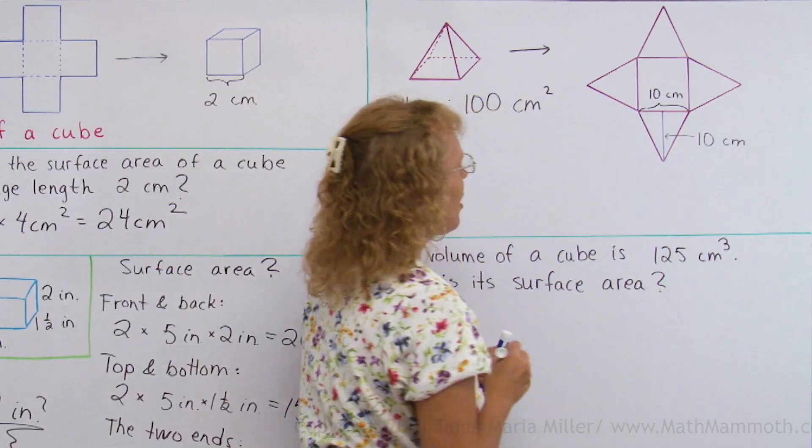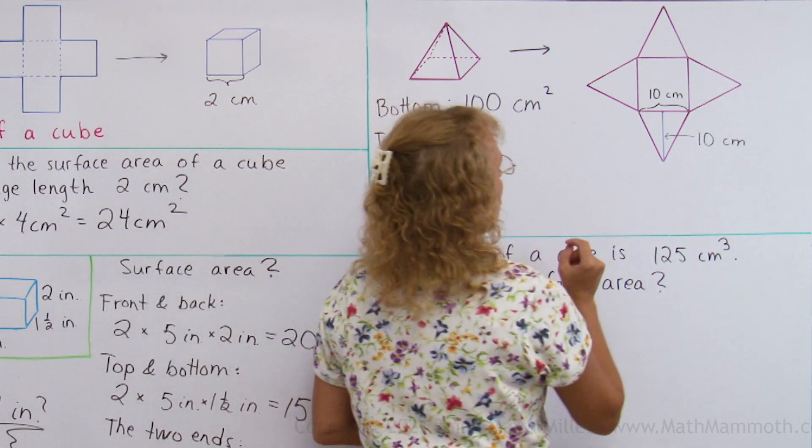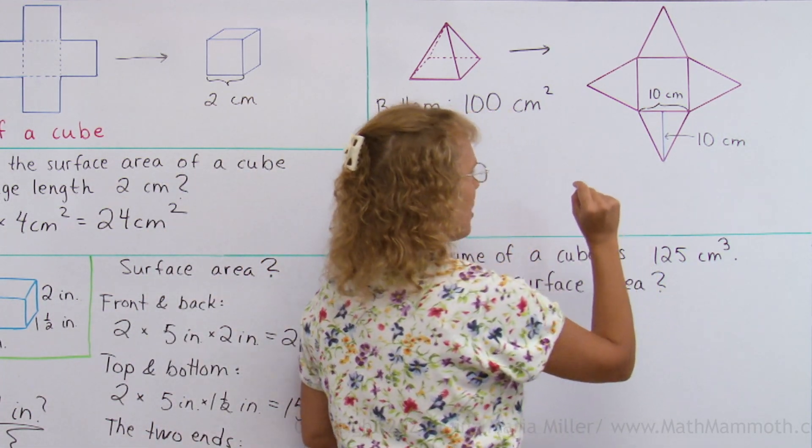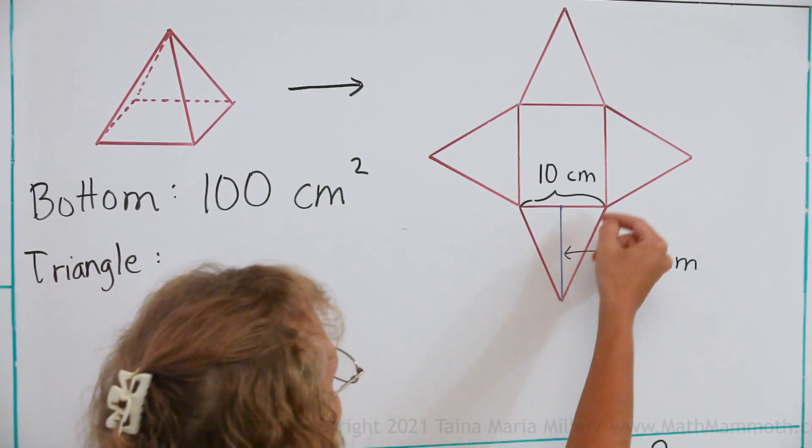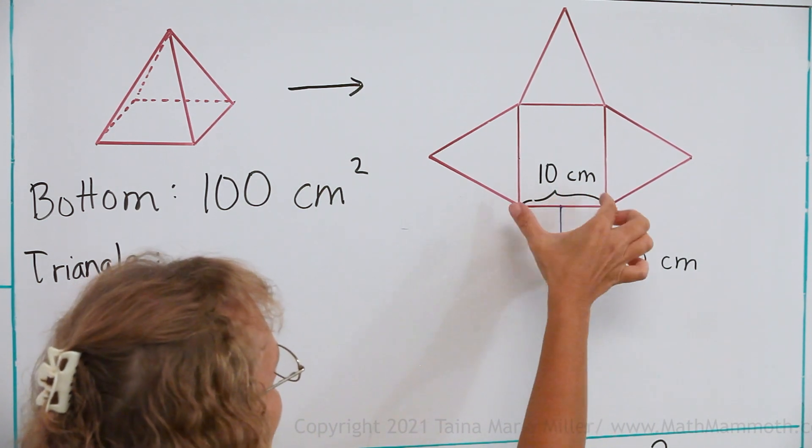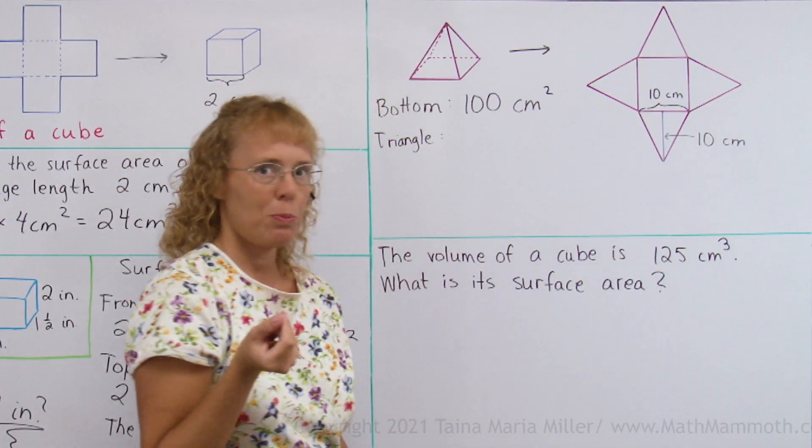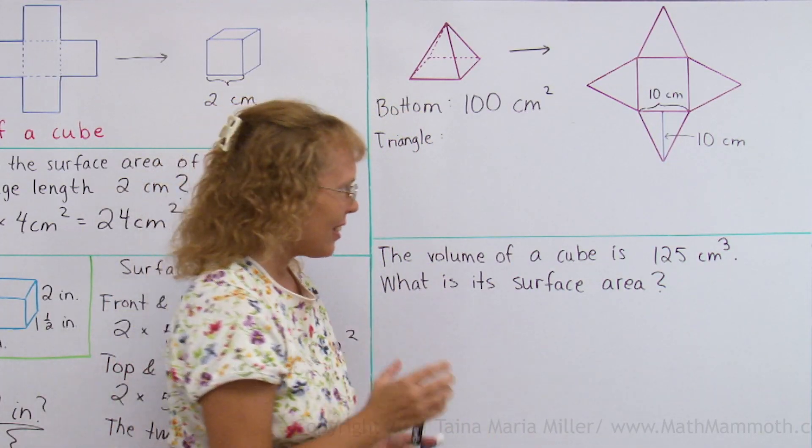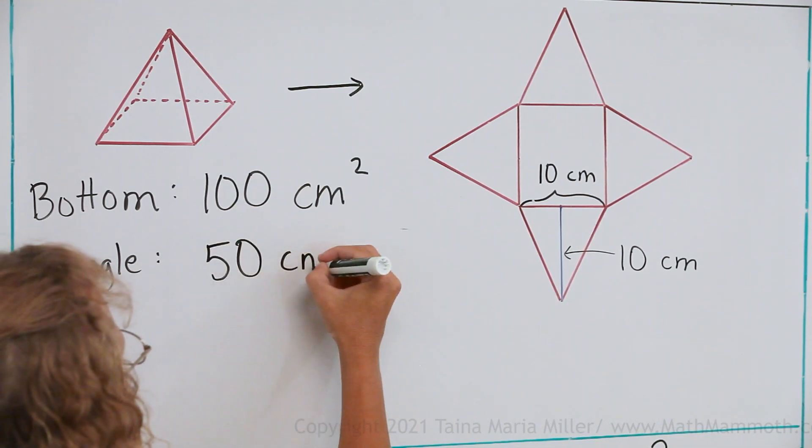One of the triangles. Now you need to remember the area of a triangle. You need to take the base times height divided by 2. For this triangle, I will use this as a base and this as the height or the altitude, right? So it's 10 times 10 divided by 2. That's 100 divided by 2. It's 50. 50 square cm.